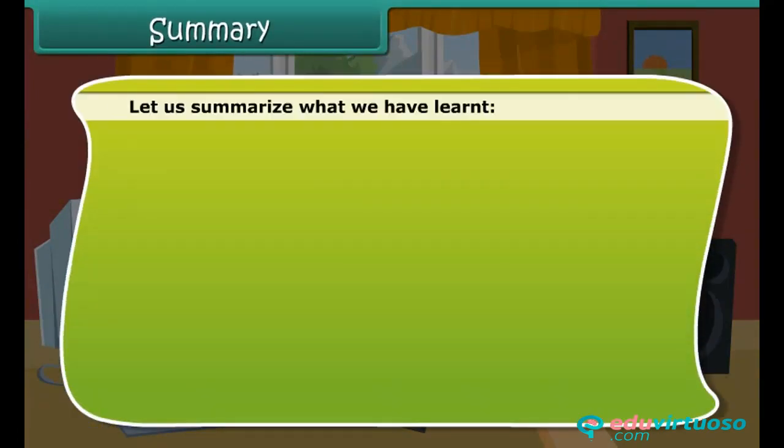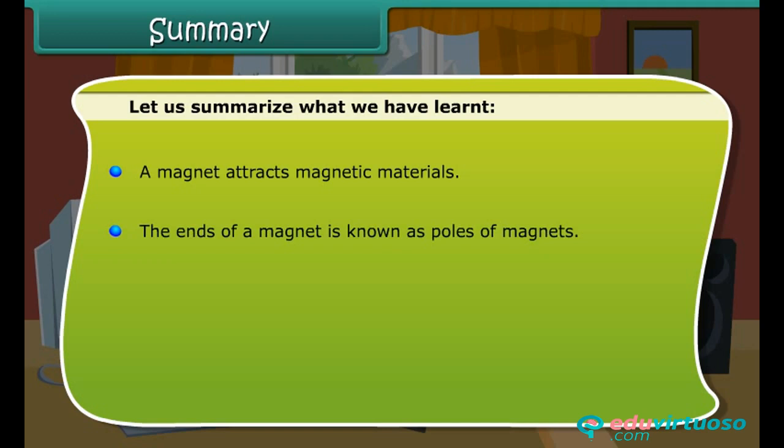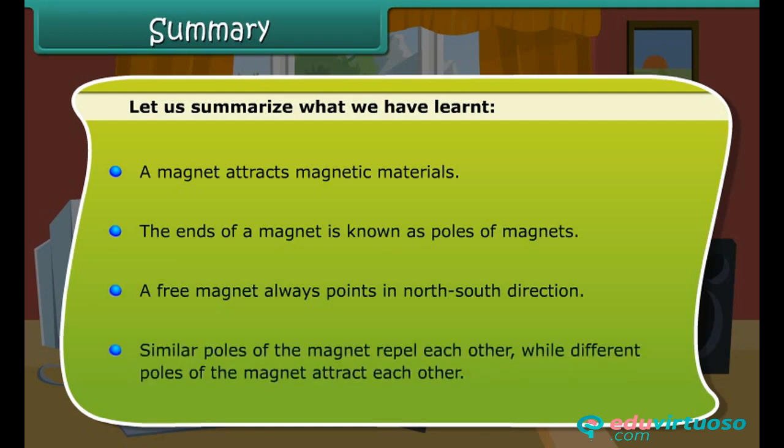Let us summarize what we have learned. A magnet attracts magnetic materials. The ends of a magnet is known as poles of magnets. A free magnet always points in north-south direction. Similar poles of the magnet repel each other, while different poles of the magnet attract each other.